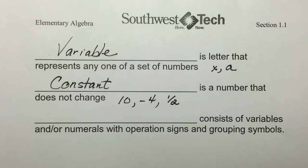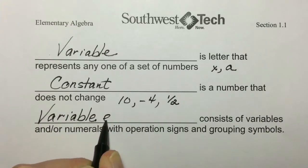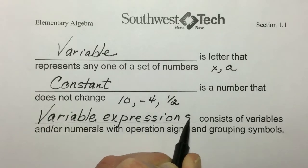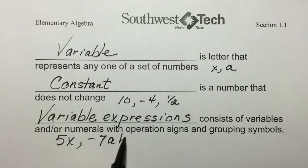Lastly, we in algebra have variable expressions, which consist of variables and or numerals with operation signs and grouping symbols. Some examples: 5x, negative 7ab.